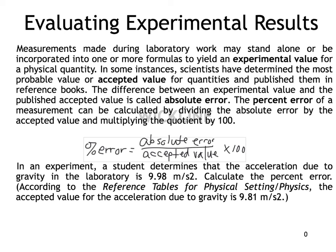Accepted values are published in textbooks and reference tables. When another scientist — even a student like you — measures that same value, there is likely to be some disagreement between your measured value and the published accepted value. The way we evaluate that difference is using the formula for percent error: take the absolute value of the difference between your value and the published value, put that over the accepted value, and multiply the overall fraction by 100.